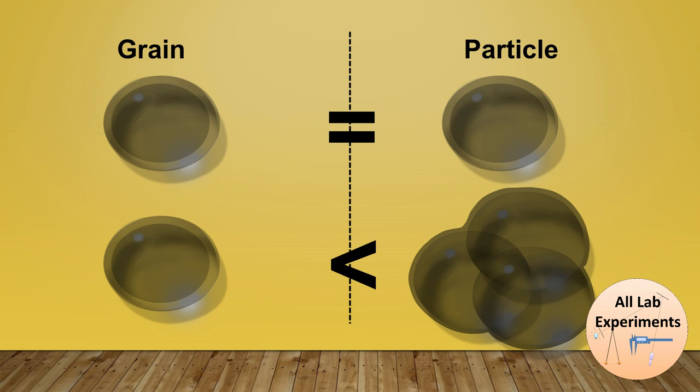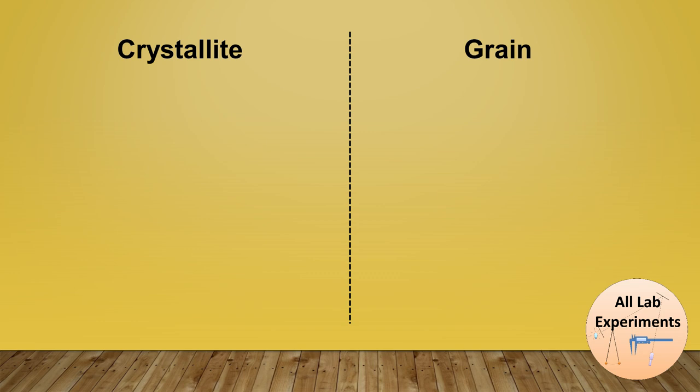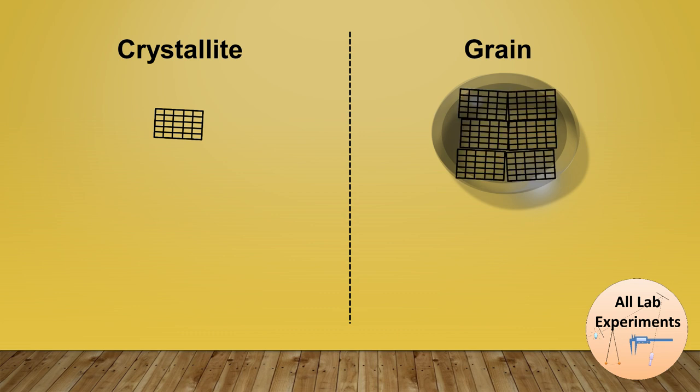Now let us discuss about crystallite and grain. So a crystallite by definition you know is the small part which diffracts coherently, and here we have a grain. But the thing is that a single grain may comprise many crystallites. So clearly in this case we can state that a crystallite is smaller than a grain.